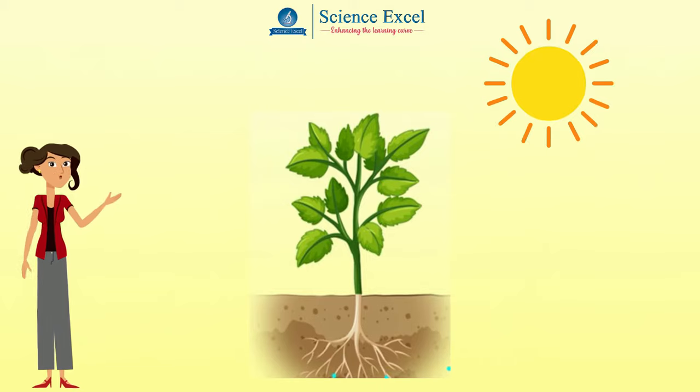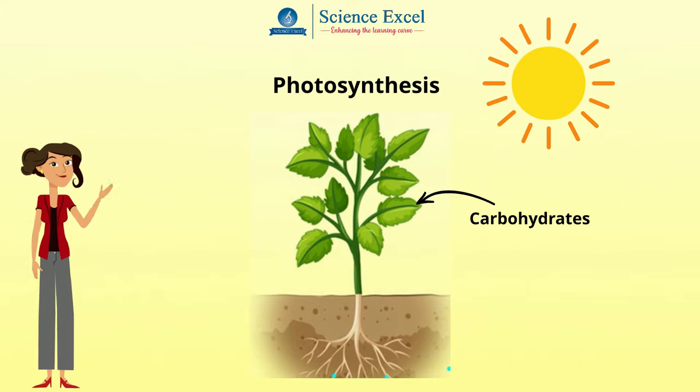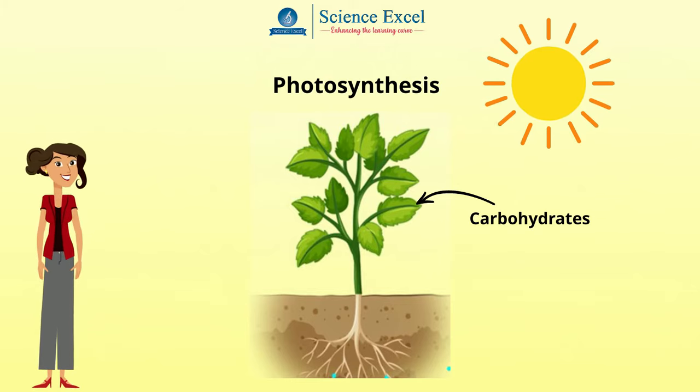We know that leaves make food in the form of carbohydrates by the process of photosynthesis. They also use some of these carbohydrates to make amino acids, proteins, and other organic substances.